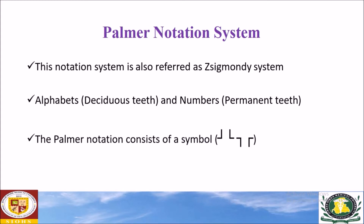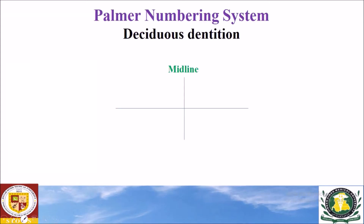The Palmer notation system consists of some symbols that we use together with the alphabets or numbers. The first symbol indicates the maxillary right quadrant, the second symbol indicates the maxillary left quadrant, the third symbol indicates the mandibular right quadrant, and the last one indicates the mandibular left quadrant.